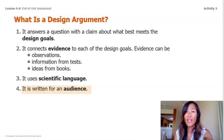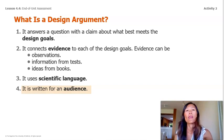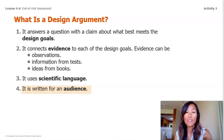Number one: it answers a question with a claim about what best makes the design goals. Number two: it connects evidence to each of the design goals. Evidence can be observations, information from tests, ideas from books. Number three: it uses scientific language. Number four: it is written for an audience. Written for an audience is highlighted because this is a new guideline for us. You will need to keep your audience in mind as you write. Remember, your audience is the principal.